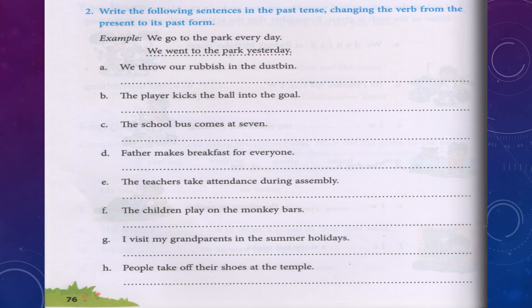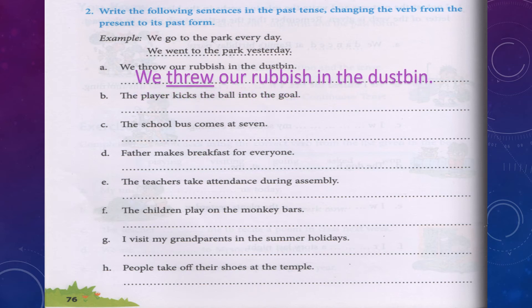Write the following sentences in the past tense, changing the verb from the present to its past form. Example: 'We go to the park every day' becomes 'We went to the park yesterday.' A. We throw our rubbish in the dustbin. Here 'throw' is the verb in present form; we change it to past form: We threw our rubbish in the dustbin.